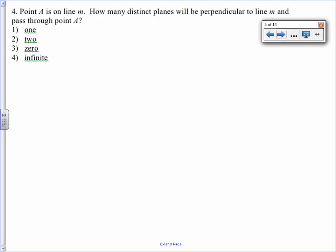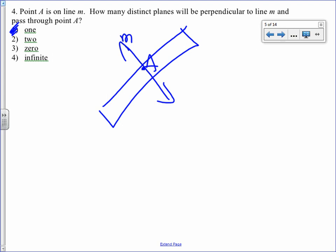Notice that choice 2 does not start with it though, therefore that can't be the answer. Choice 1 is your answer. Point A is on line M. Here's line M. Here's point A. How many distinct planes will be perpendicular to line M and pass through point A? Well there's only one. It's hard for me to show you here but the plane that would pass through here would be the only one that passes through.